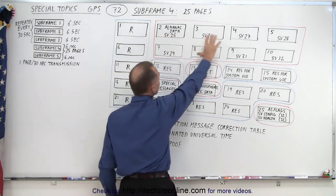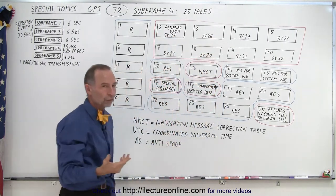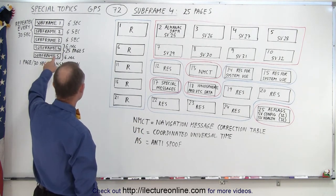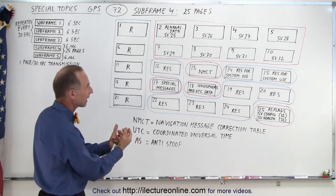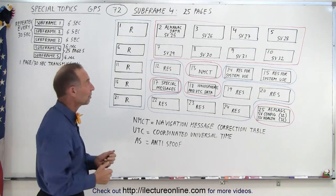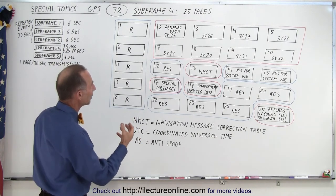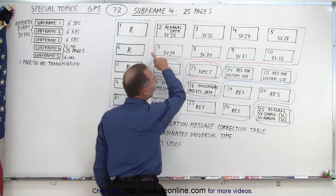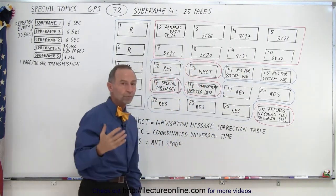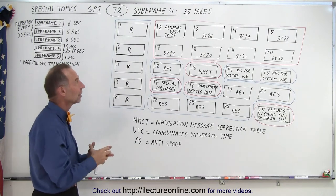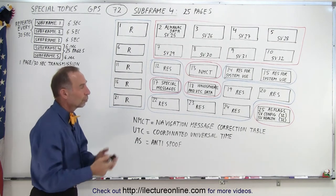But notice that the content in here is identical in structure to the content of 24 pages in subframe 5 that contain the almanac data of the other 24 space vehicles. So currently we have the capability of having almanac data available for 32 total space vehicles. Of course it takes 12 and a half minutes to get all that data across from the satellite to the receivers.